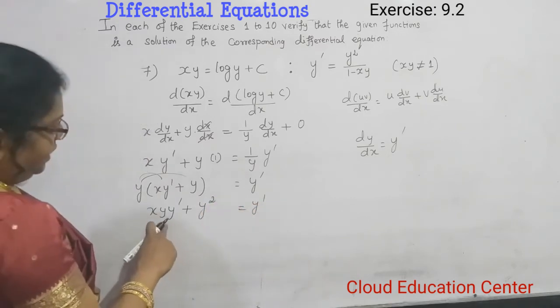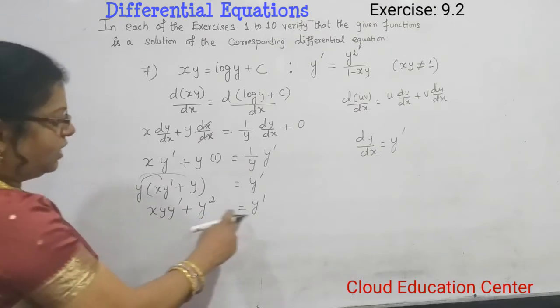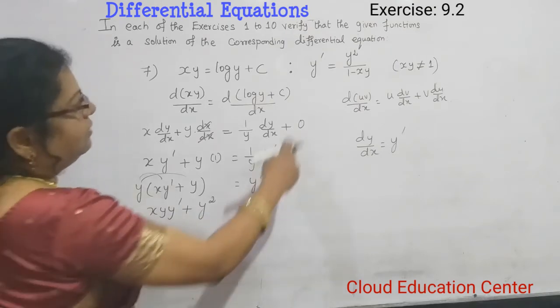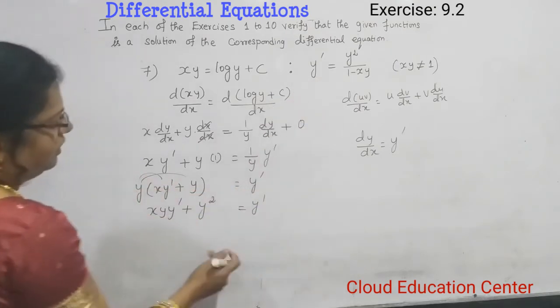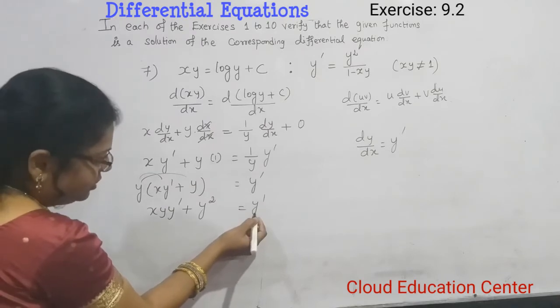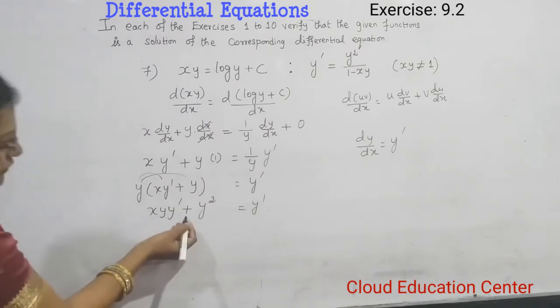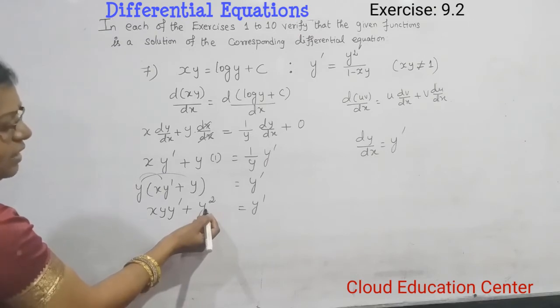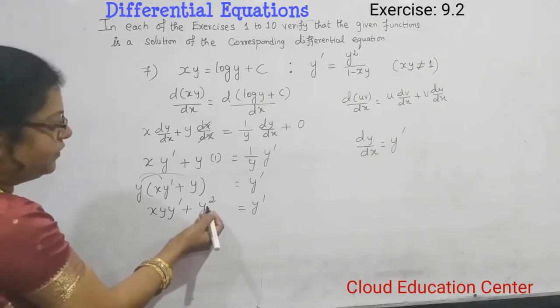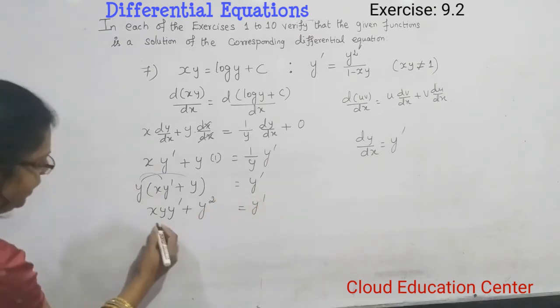But here, LHS also has y dash and RHS also has y dash, but we want a common y dash. So we're going to take this y dash to the left-hand side, and this y square doesn't contain any first order differentiation, so we're moving it to the right.